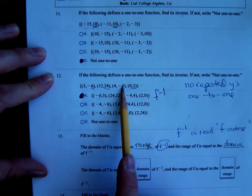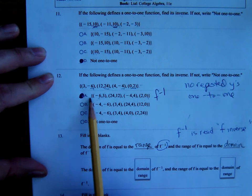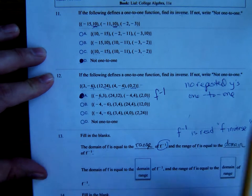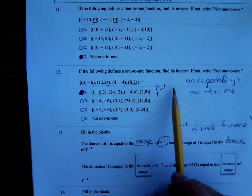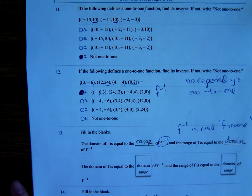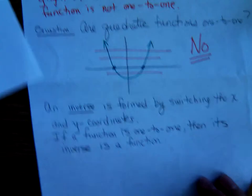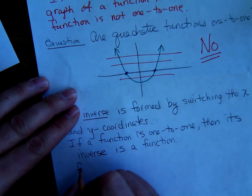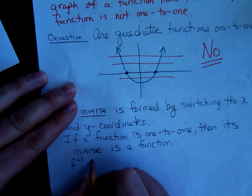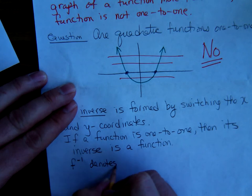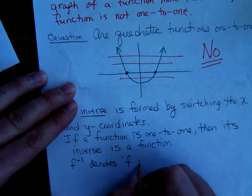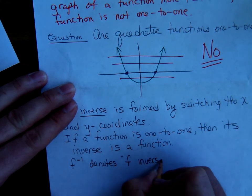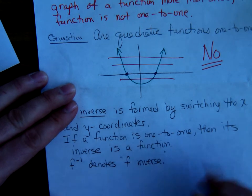Number 12 it's one-to-one, no repeated y's, so there's the inverse function. The notation we're going to be using to denote inverse function is f with a little minus one denotes f inverse.